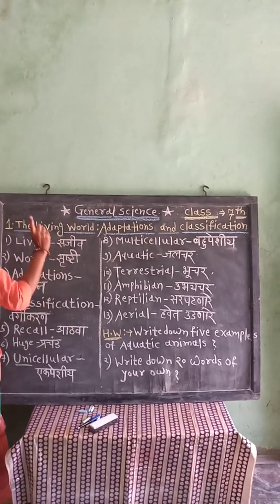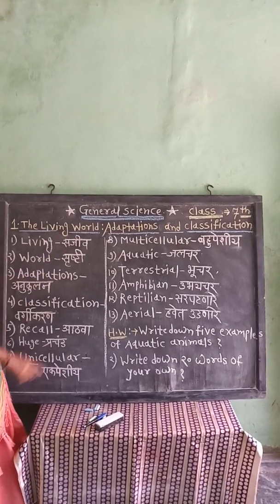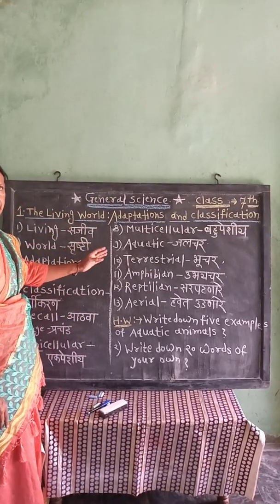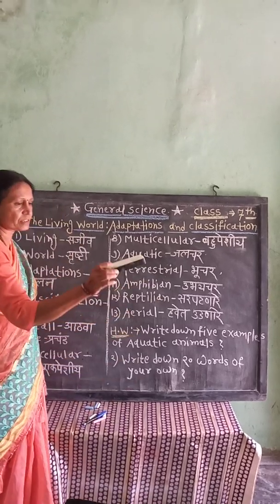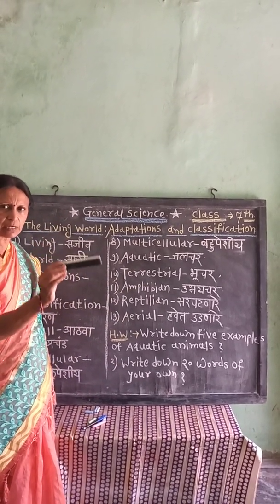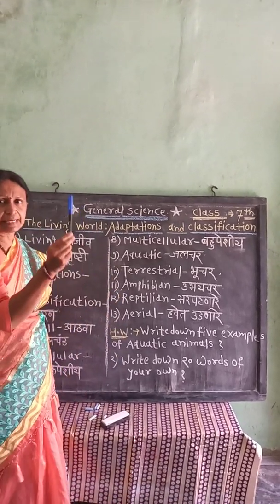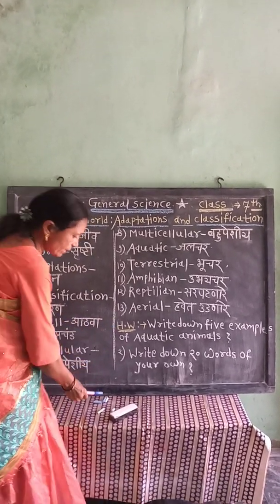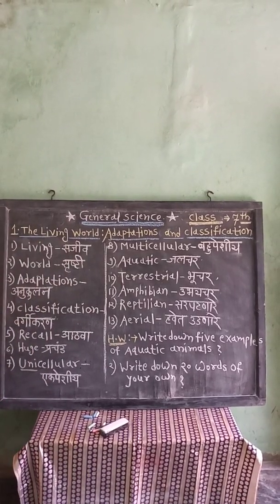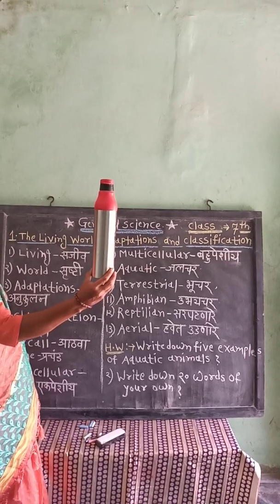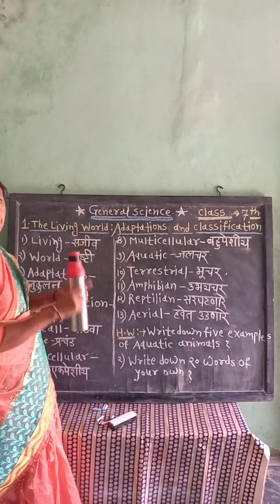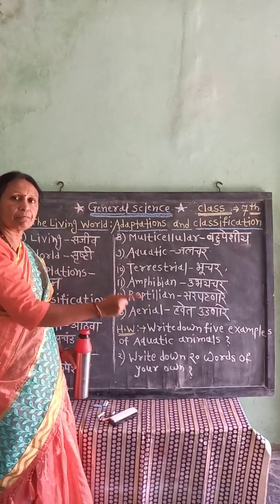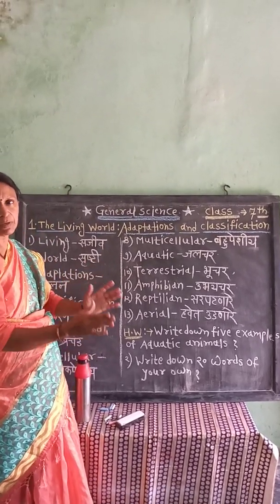Living means Sajeev, Non-Living means Nirjeev. Look at this blackboard — the blackboard is Non-Living. The duster is Non-Living. The pen is Non-Living. The chalk is Non-Living. Look at this water bottle — the water bottle is Non-Living. Pen, pencil, chalk, duster, blackboard, door, chair, fan, window — all are examples of Non-Living.